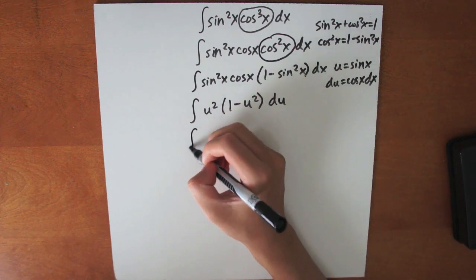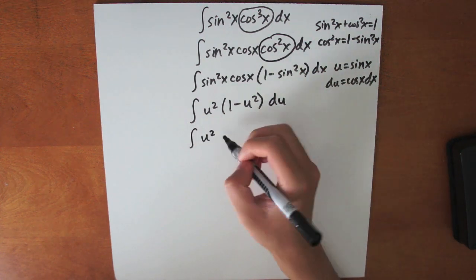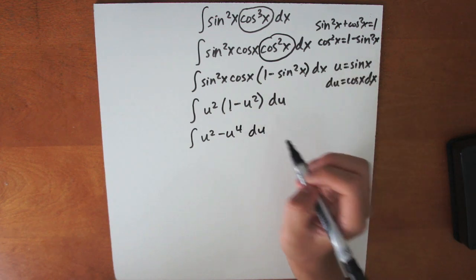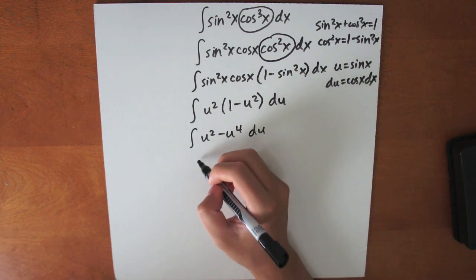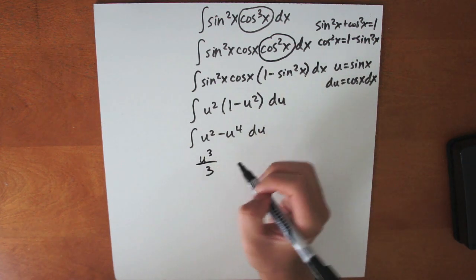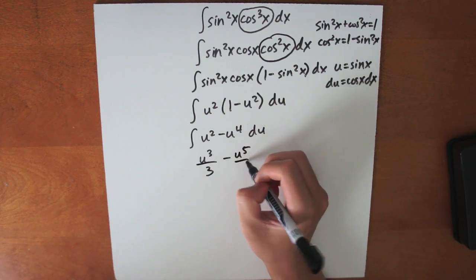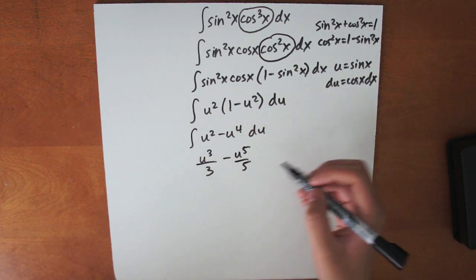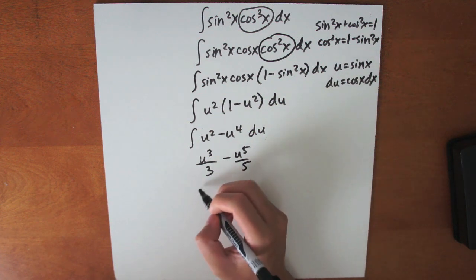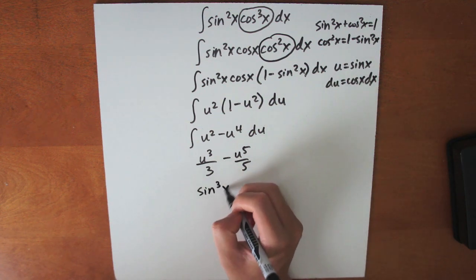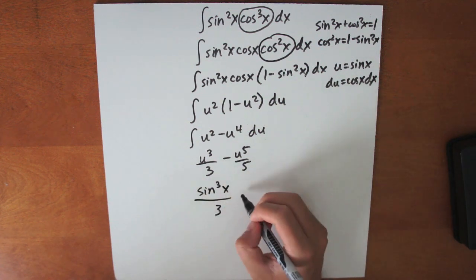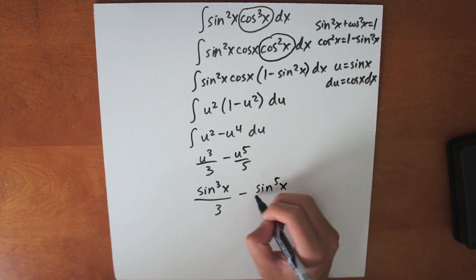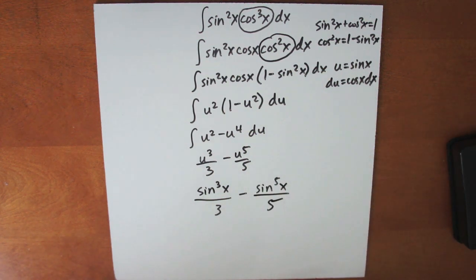Thanks to the substitution, cosine cancels out, so we get u squared times (1 minus u squared) du. Now we simplify to u squared minus u to the fourth du, and evaluating the integral gives u cubed divided by 3 minus u to the fifth divided by 5. Substituting back, we get sine cubed x over 3 minus sine to the fifth x divided by 5. That's our final answer.